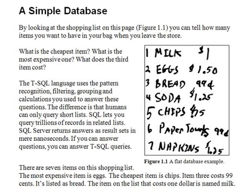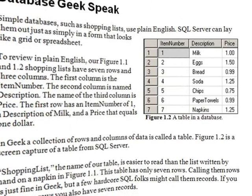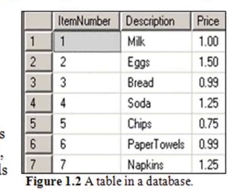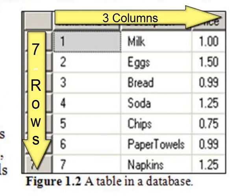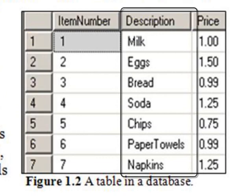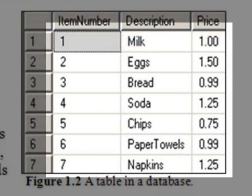In the first section of this chapter we learn that databases come in all forms, including this shopping list. Whether or not you have the book with this figure, we get to see what the exact same shopping list would look like inside a table in SQL Server. Figure 1.2 shows a shopping list with seven rows and three columns. The first column is item number, the second is description, and the third is price. The first row has an item number of one, a description of milk, and a price of one dollar. In geek speak, a collection of rows and columns of data is called a table.